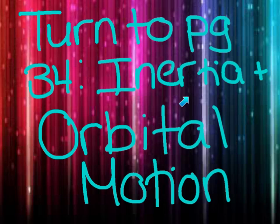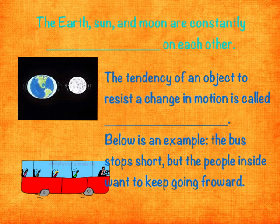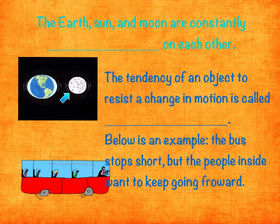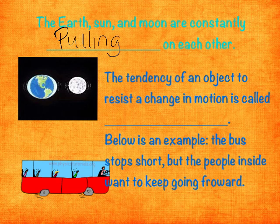Please turn to page 34 in your ISM. We're going to go over the inertia and orbital motion foldable, starting with inertia first — that's the first two slides — and the last slide is orbital motion. Gravity has to deal with inertia and orbital motion. Here's our Earth and our Moon. The white bulges are ocean waters showing tides, and the white lines show the Earth and Moon pulling on each other. Gravity is a force of attraction, so the Earth, Sun, and Moon are constantly pulling on each other. But if they're constantly pulling on each other, wouldn't the Moon just pull right into the Earth?